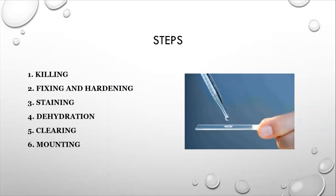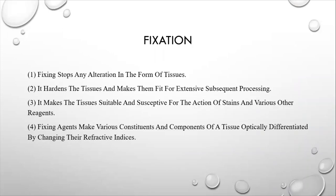We are not doing here killing because we are using the samples of gemmules. So let me explain each one of them. Fixation stops any alteration in the form of tissues. It hardens the tissues and makes them fit for extensive subsequent processing. It makes the tissues suitable and susceptible for the action of stains and various other reagents. Fixing agents make various constituents and components of a tissue optically differentiated by changing their refractive indexes.